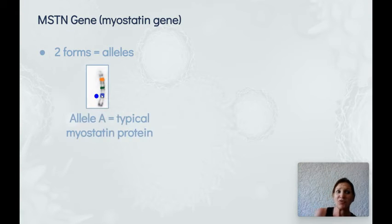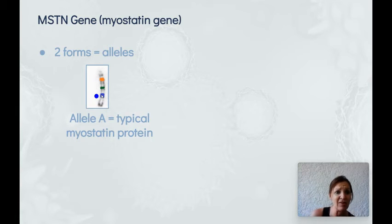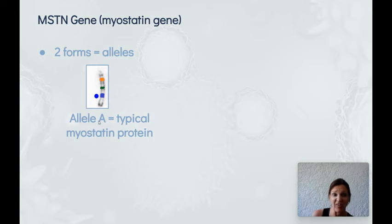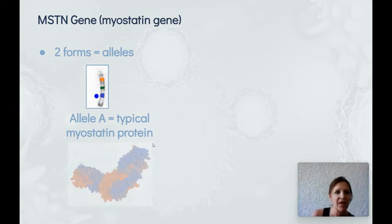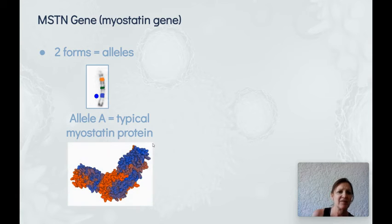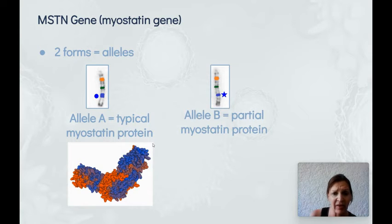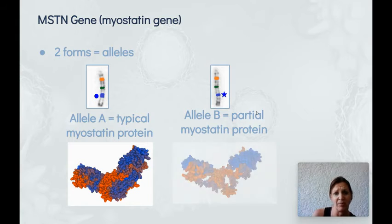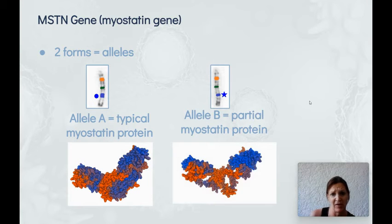There are two forms of the myostatin gene, and these forms are called alleles. Allele A leads to the typical myostatin protein — the one that's not holey. The second form, allele B, we represent with a star because it's different, and that leads to the partial myostatin protein.